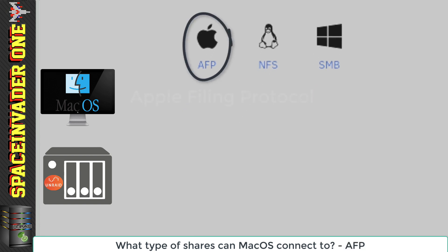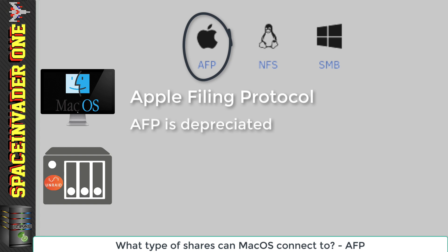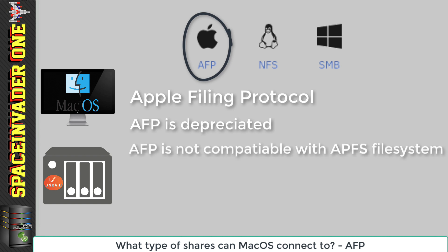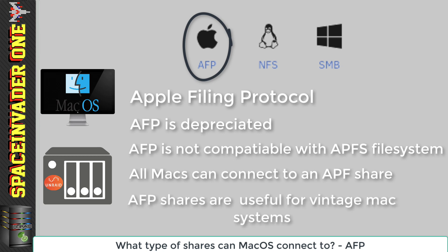AFP stands for Apple Filing Protocol and was developed by Apple for use by Apple clients on the network. However, nowadays AFP is actually deprecated by Apple. The AFP protocol does not support the new APFS Apple file system. So if you have a Mac OS system whose hard drive is formatted with the new file system, you can't use it to serve AFP shares — basically, new Macs can't serve AFP shares, though all Macs can connect to one. There's no point using AFP on your Unraid server unless you've got some old Apple legacy hardware that can only connect that way.